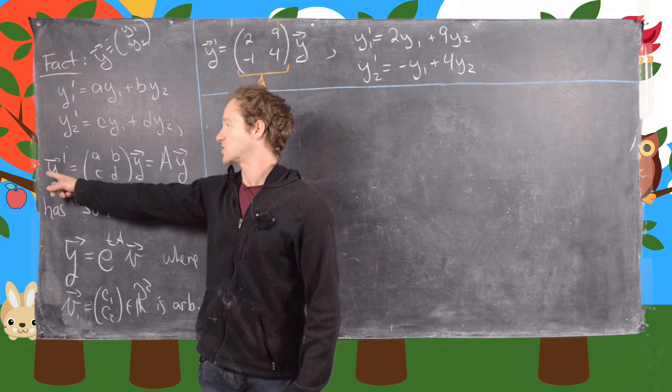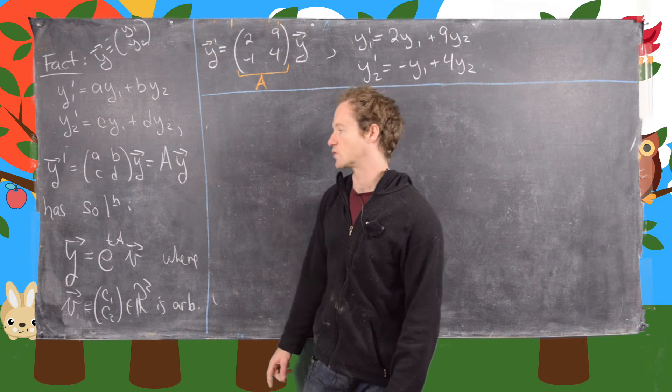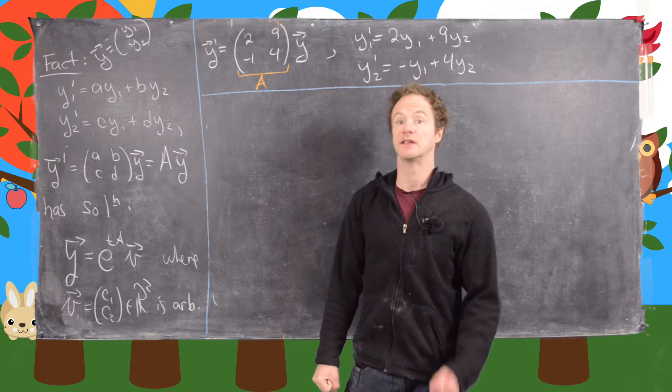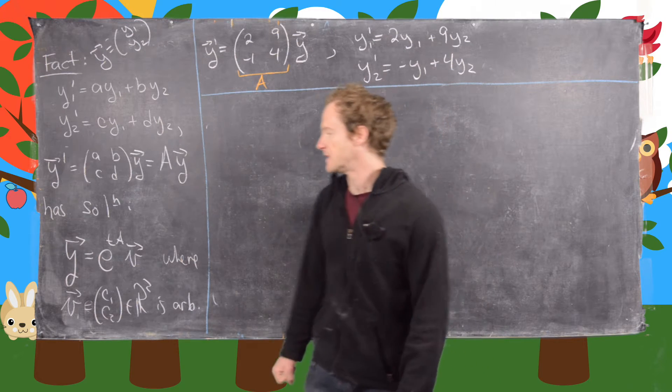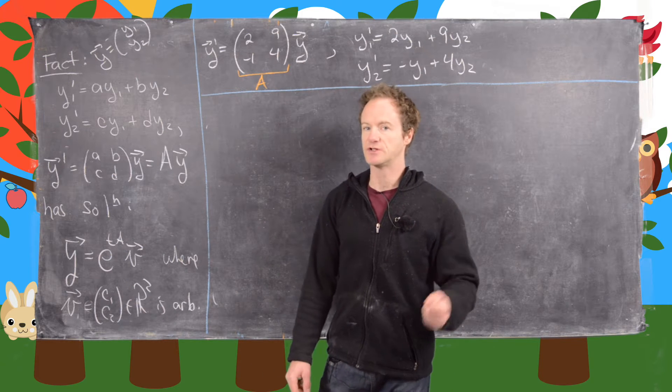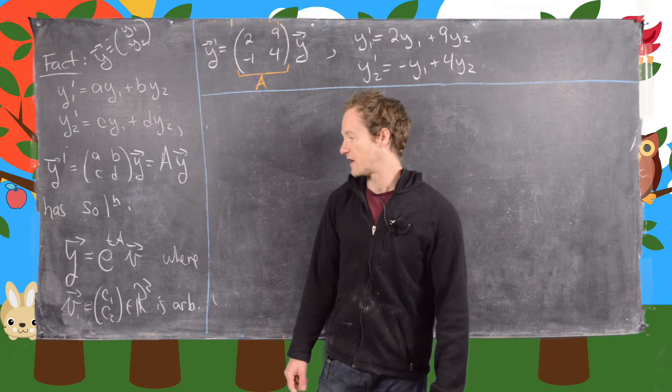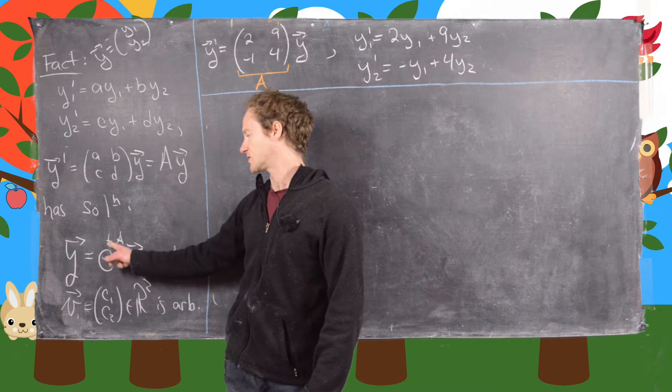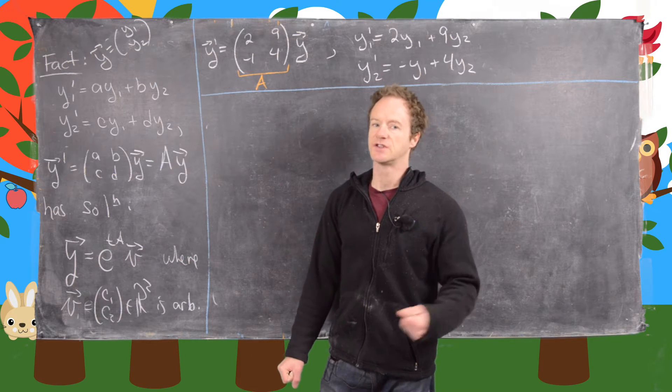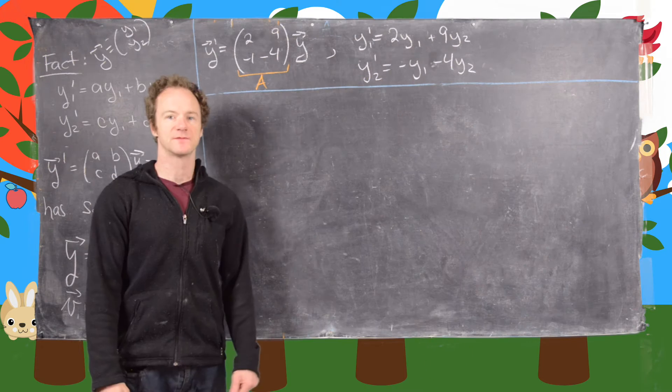So we have vector function y prime equals matrix A times vector function y, and it has this nice solution which mimics what would happen with a single differential equation, and that would be y equals e to the tA, this matrix exponential, which I've got a bunch of videos where I calculate that and go over the theory of how to calculate that. So this matrix exponential e to the tA times v, and v is an arbitrary vector. So in fact that will depend on the initial conditions if we had some, but we don't in this case.